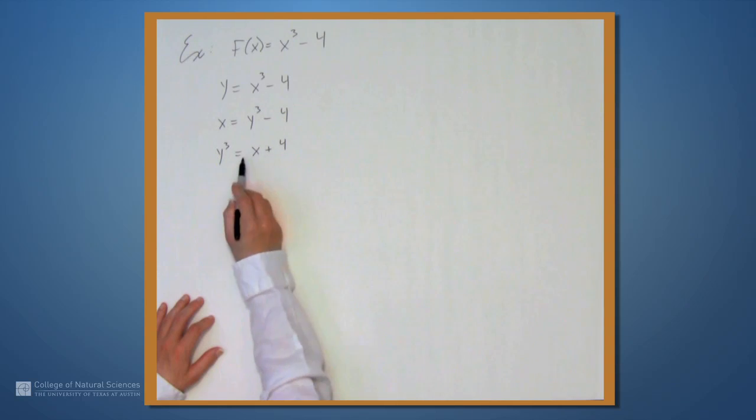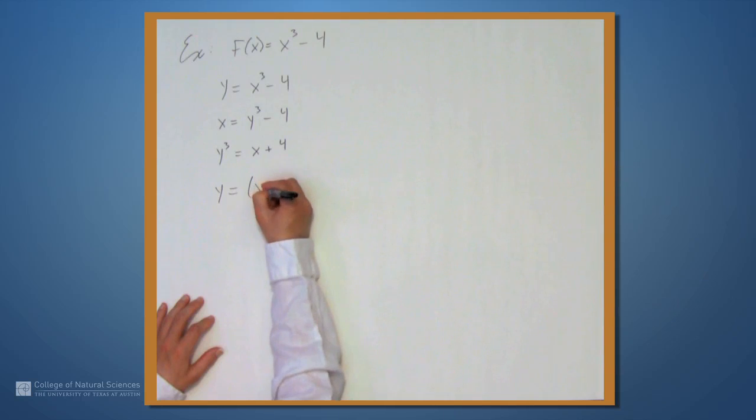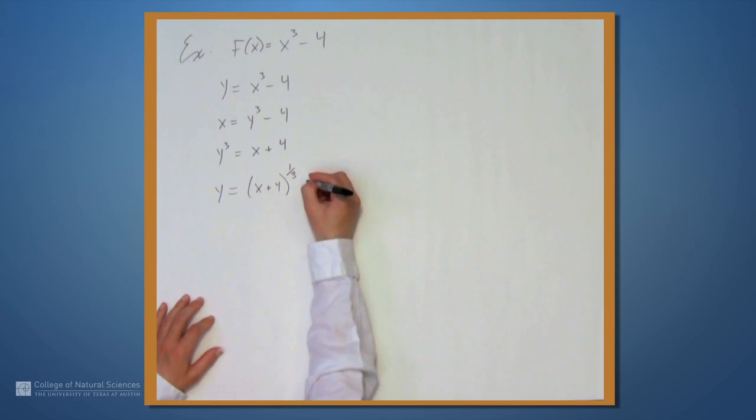And then, we'll take the cube root of both sides to leave just a y on the left-hand side. And we get y equals (x plus 4) to the 1/3. And this is f inverse of x.